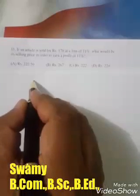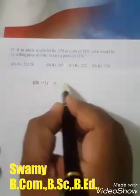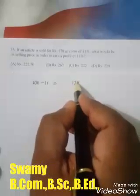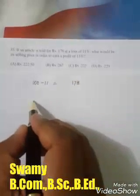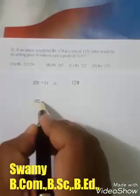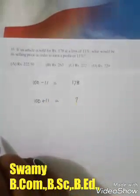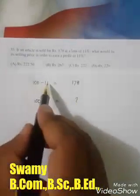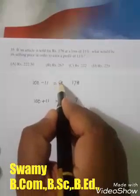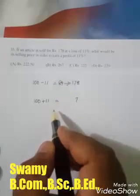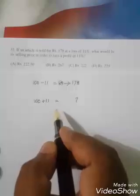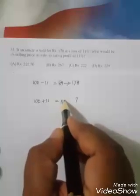That means 100 minus 11% equals 178 is given, and they are asking us to calculate 100 plus 11% equals how much. That means 100 minus 11 is nothing but 89, so for 89% we have 178 rupees. For 111%, it is how much?